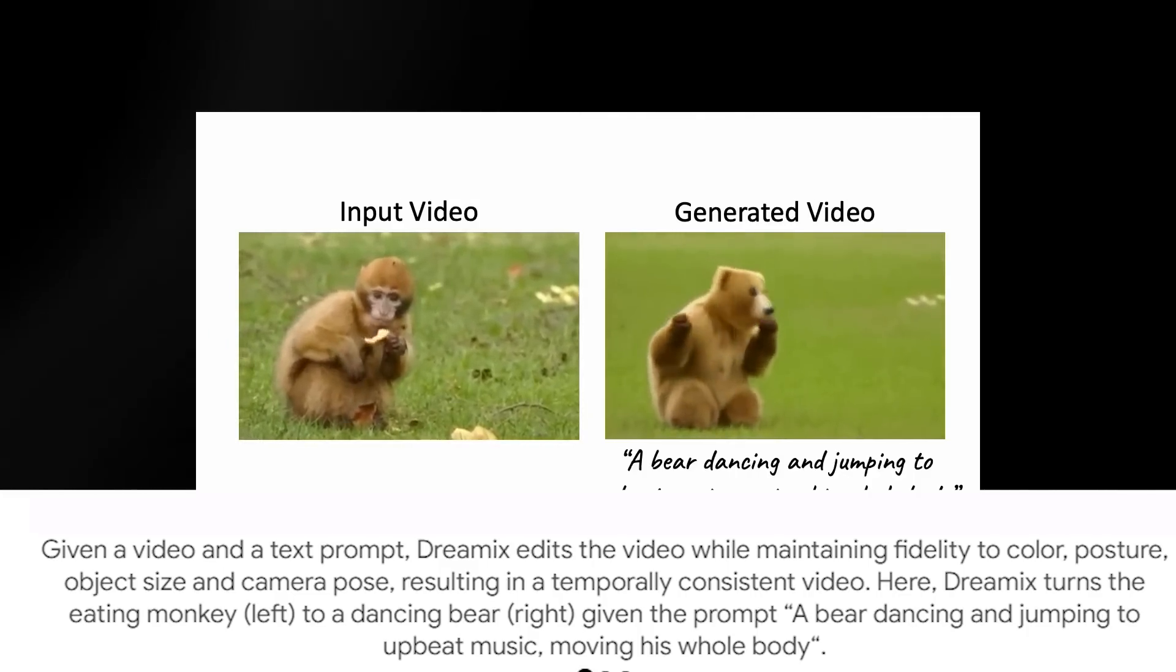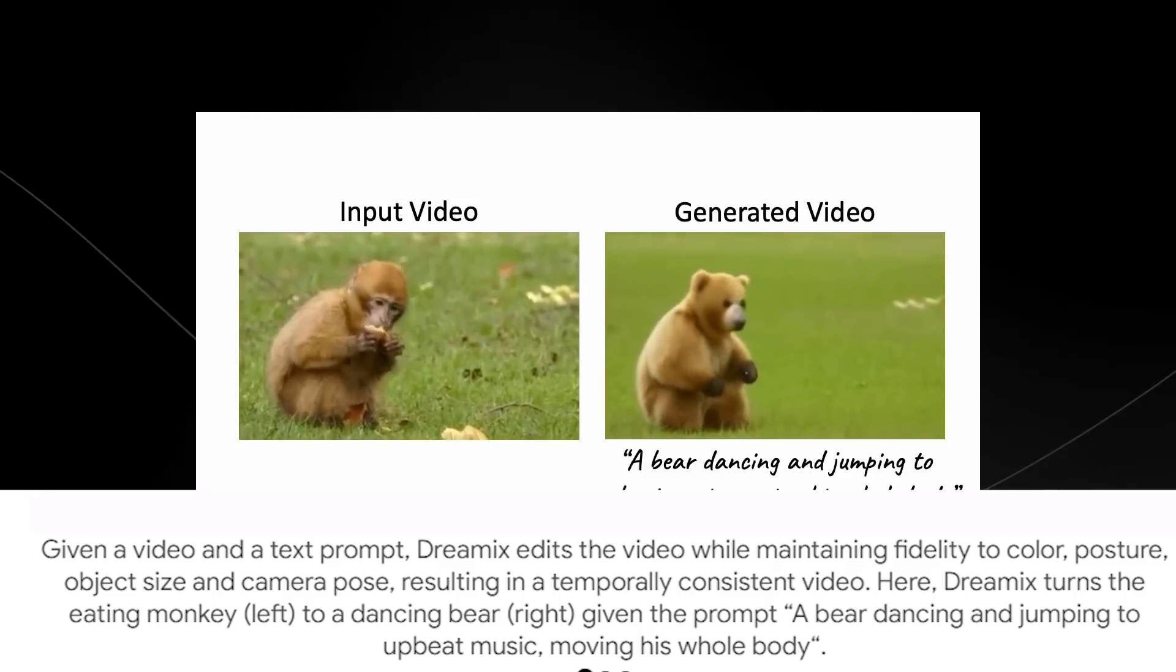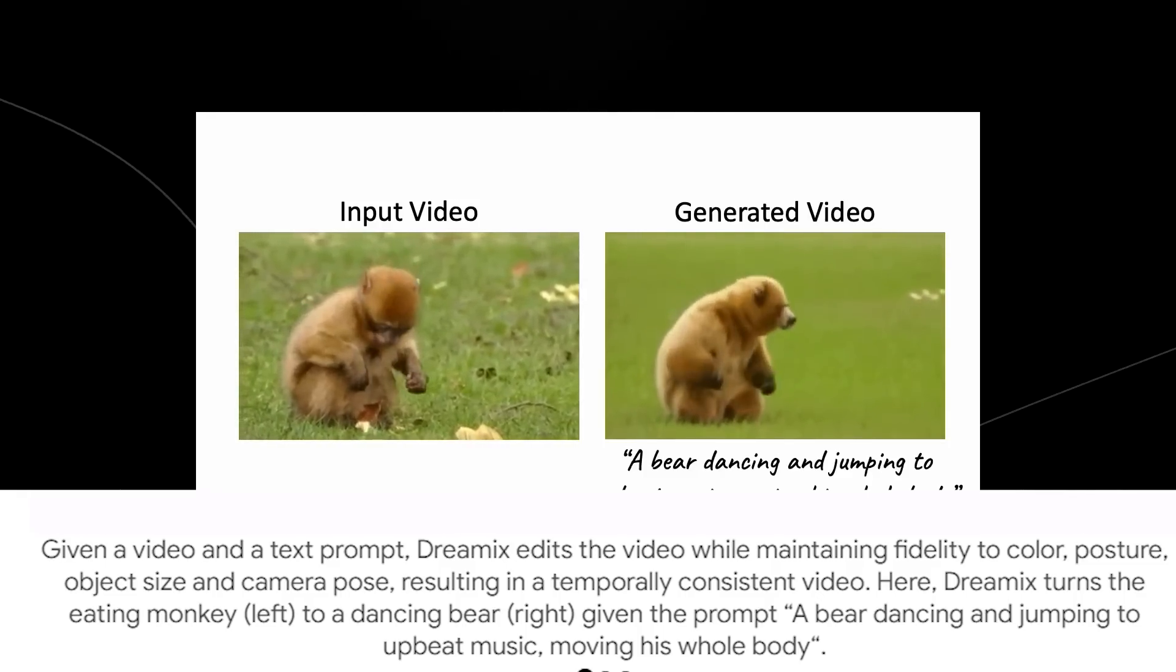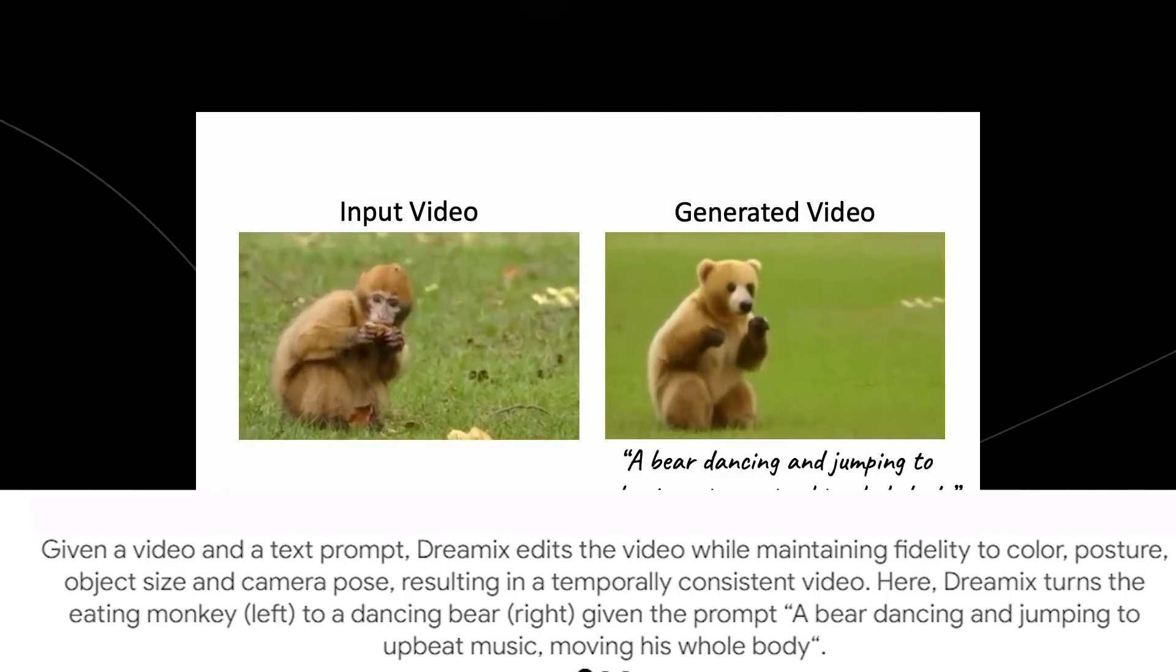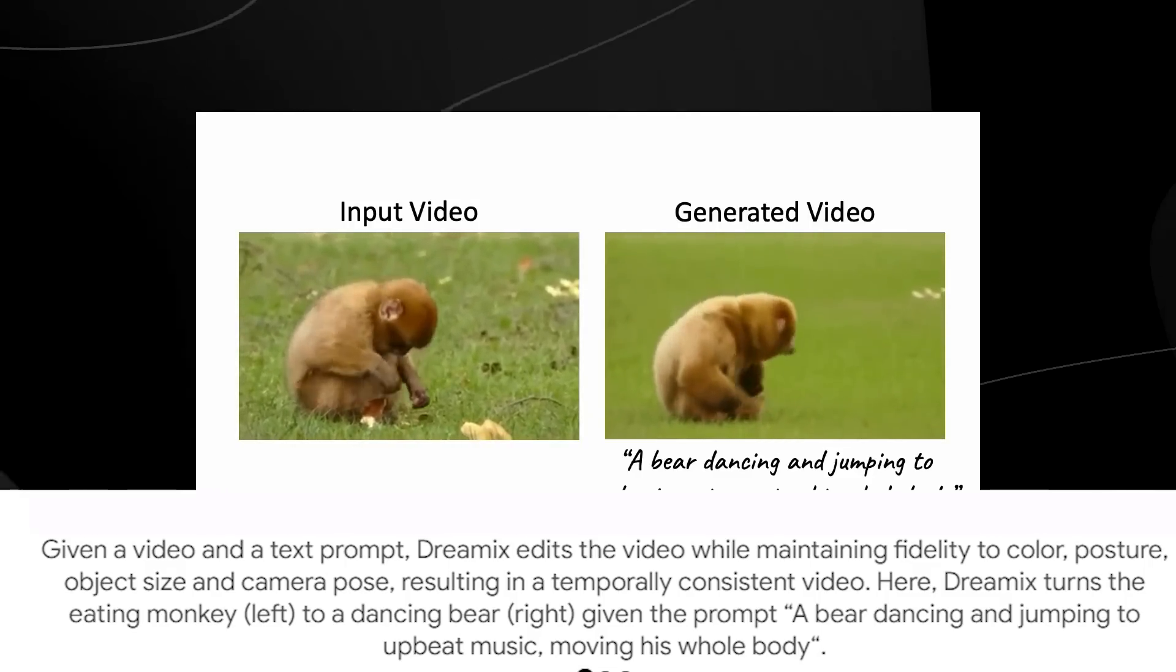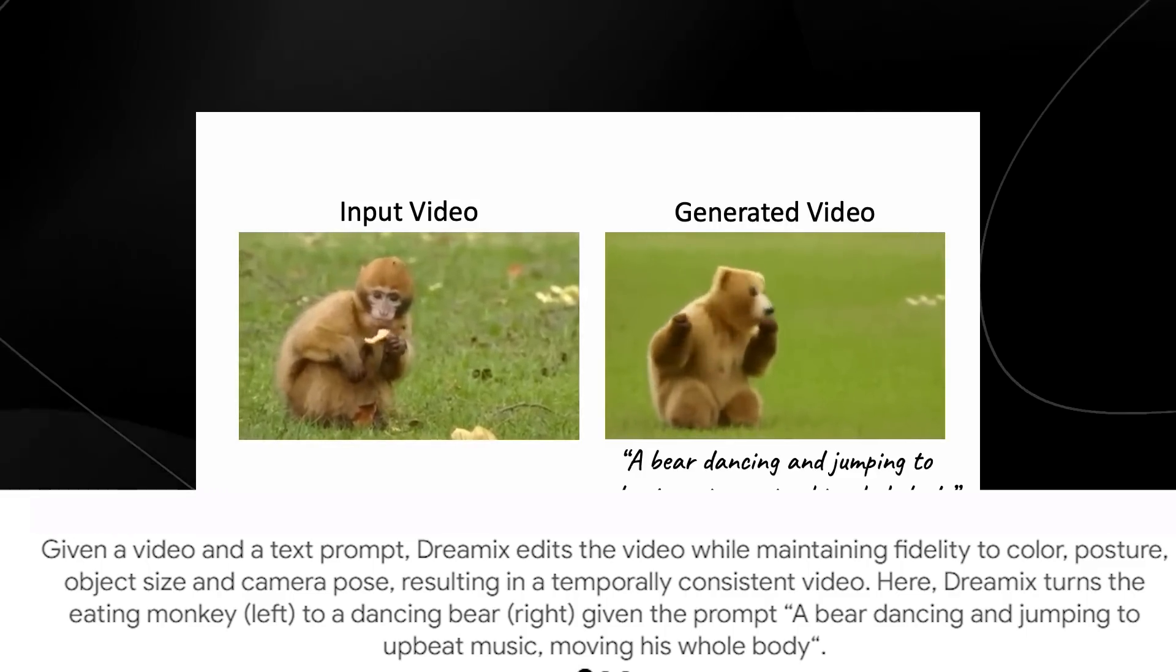It says, given a video and a text prompt, Dreamix edits the video while maintaining fidelity to color, posture, object size, and camera pose, resulting in a temporally consistent video. Here, it turns the monkey, which you can see on the left, to a dancing bear on the right, given the prompt: a bear dancing and jumping to upbeat music while moving his body.